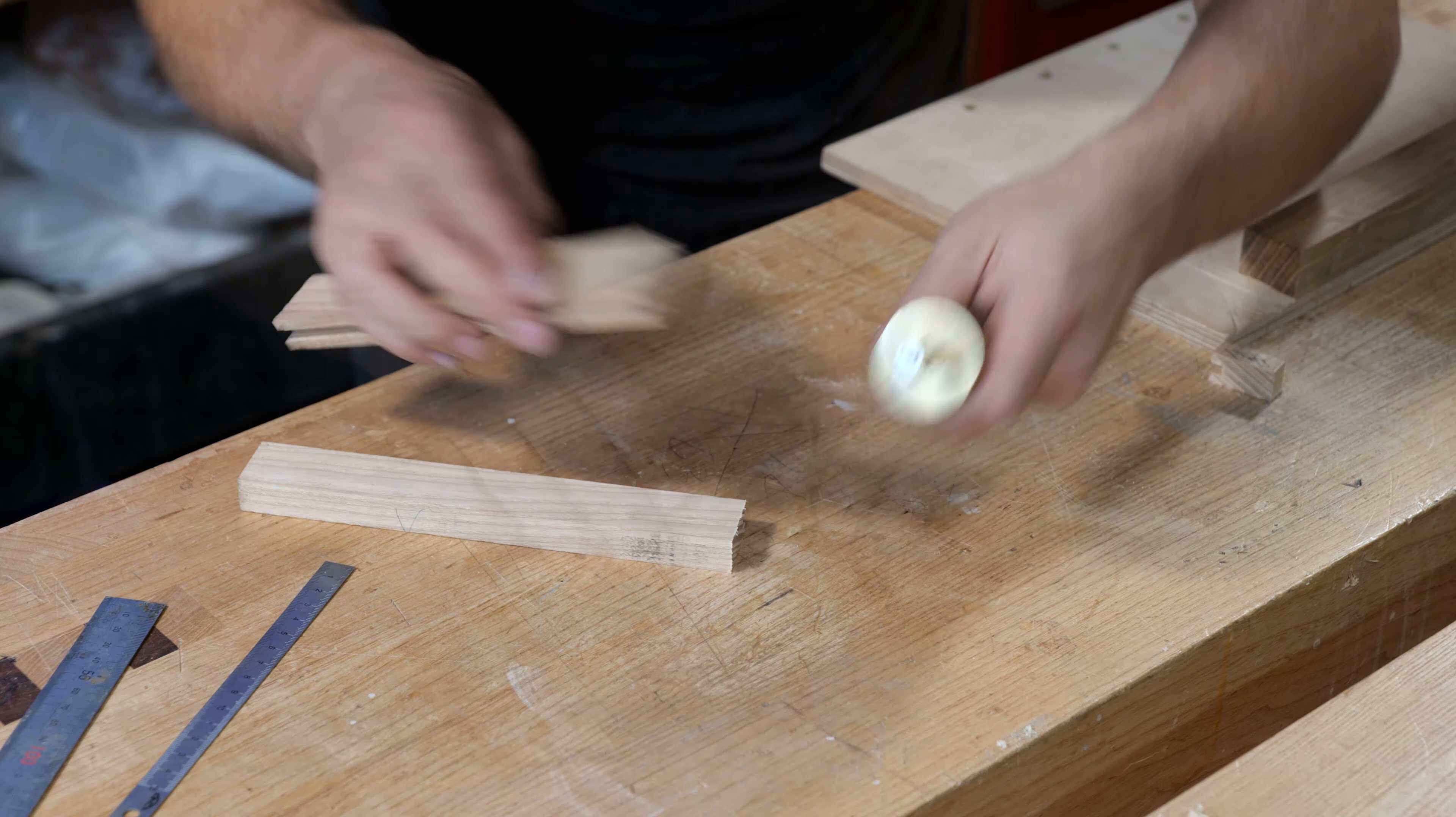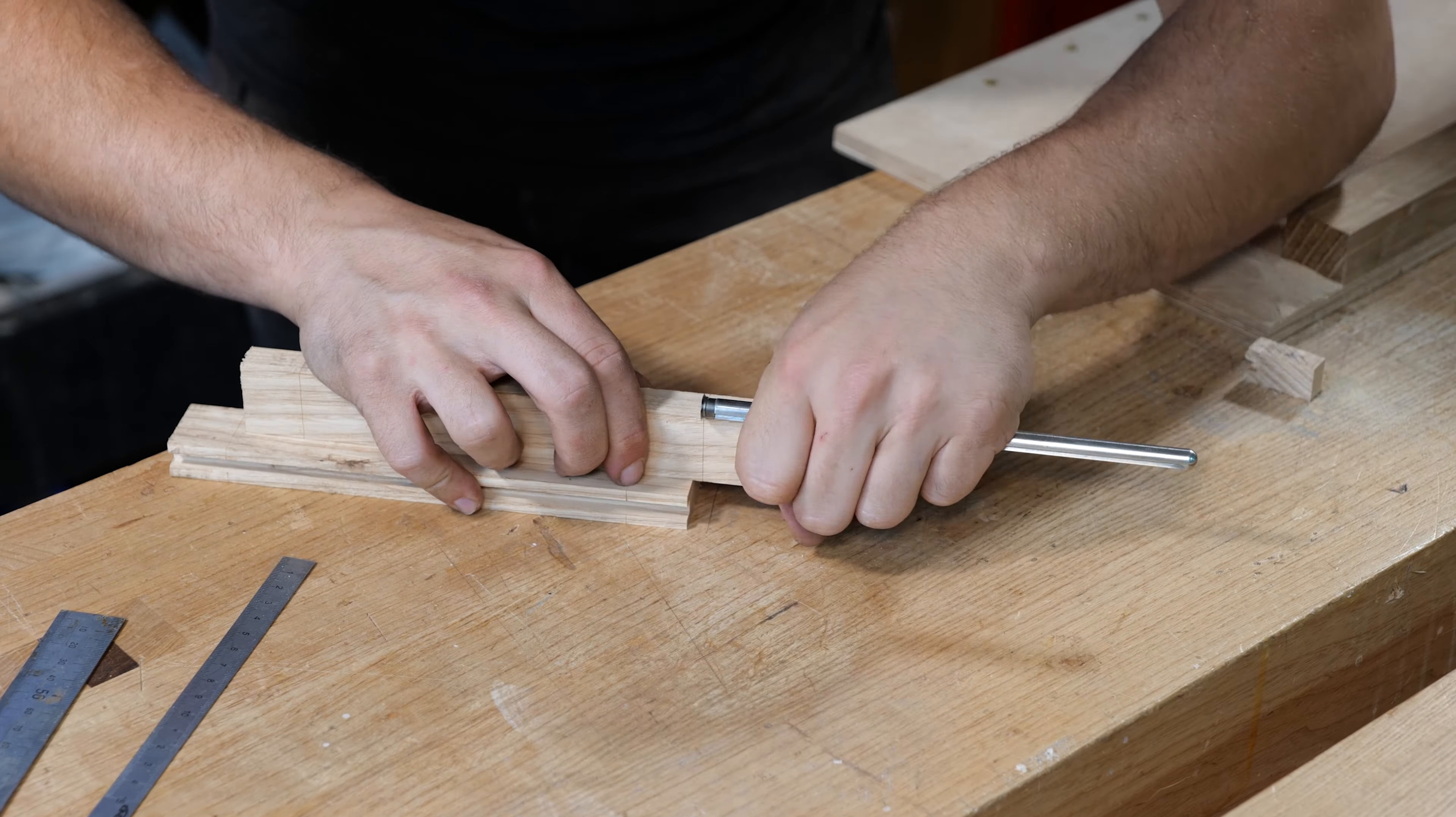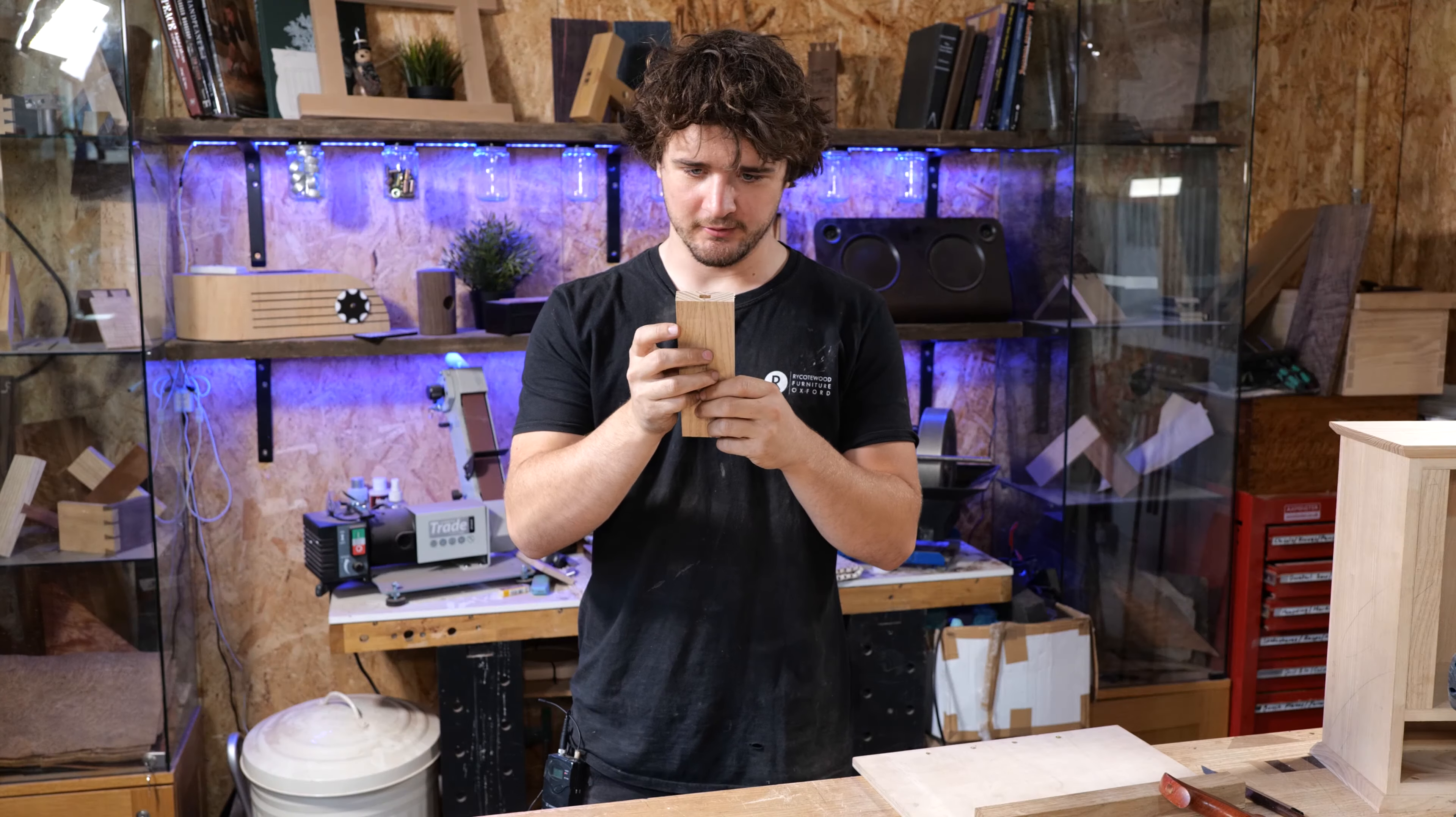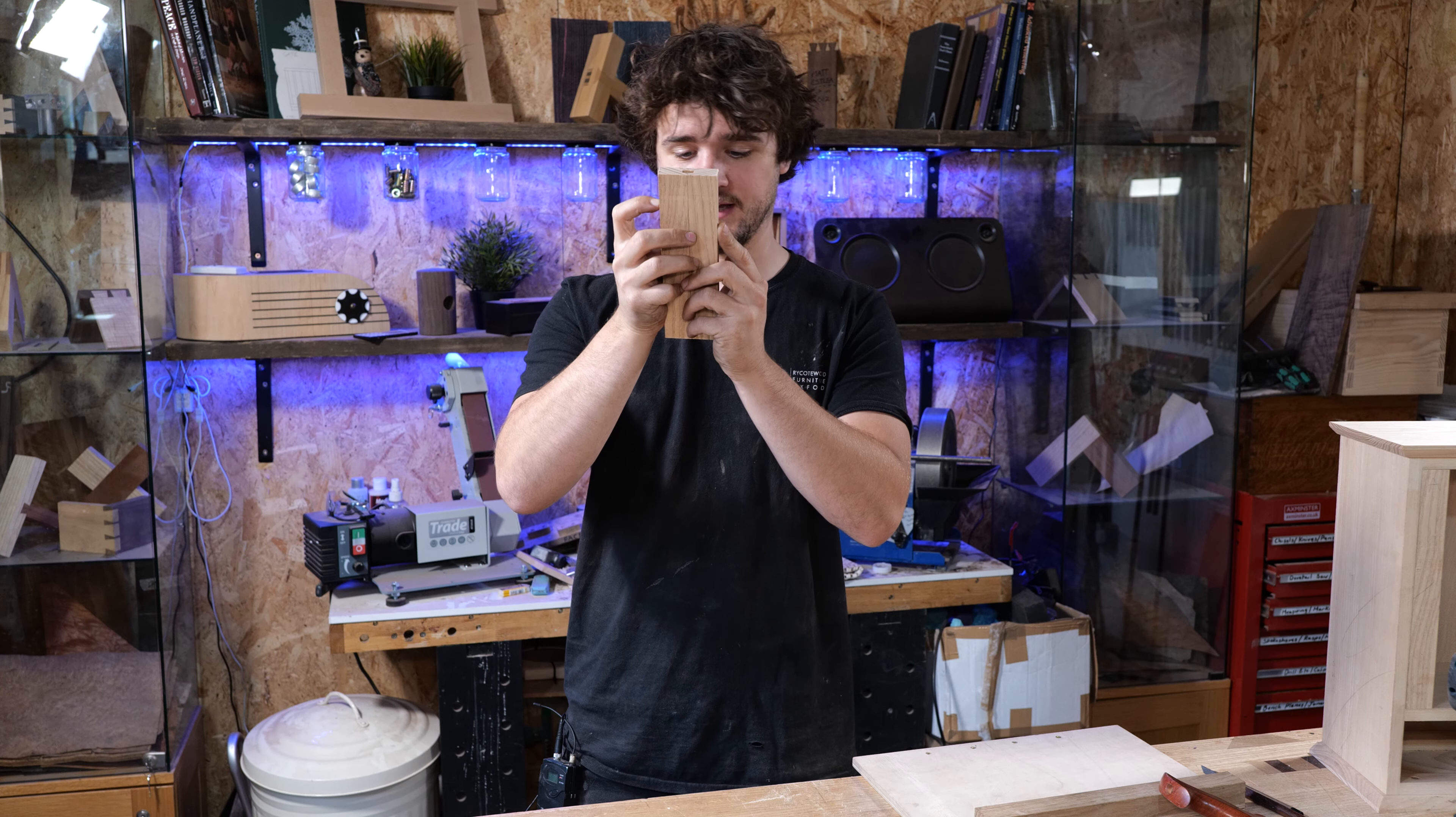At this point it's good to check your components, check that they're exactly the same length and those shoulder lines are bang on in line with one another, because you really don't want an out of square door at this point or at any point for that matter.